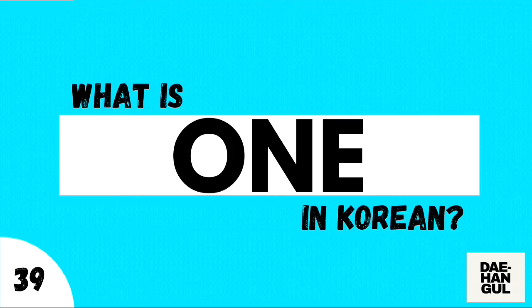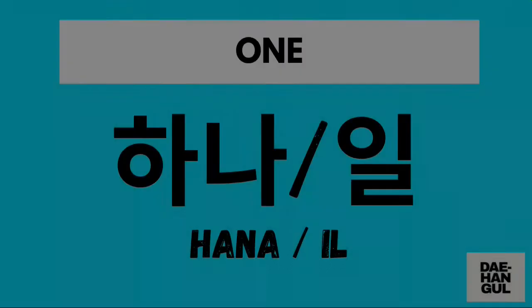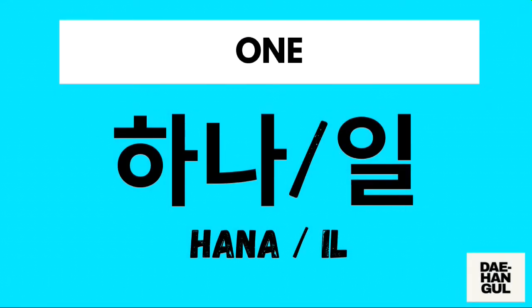What is one in Korean? There are two ways of counting in Korean, and one could be 'hana' or 'il.' Number one could be 'hana' or 'il' in Korean. 'Hana' is the native Korean number one, and 'il' is the Sino-Korean number one.